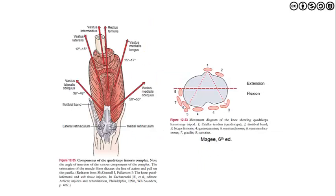Here we can visualize the components of the quadriceps femoris complex. We can appreciate both medial and lateral retinacular fibers as well as line of pull. The vastus lateralis obliquus pulls at approximately 38 to 48 degrees, the vastus medialis obliquus at 50 to 55 degrees, and then we have the vastus medialis longus, vastus lateralis, rectus femoris, and vastus intermedius. In this figure from McGee's sixth edition, we can visualize the movement of the knee showing not only the quadriceps but also the hamstrings, which serve as a tripod: the patellar tendon (1), iliotibial band (2), biceps femoris (3), gastrocnemius (4), semitendinosus (5), semimembranosus (6), and gracilis and sartorius (7 and 8) inserting at the pes anserine.